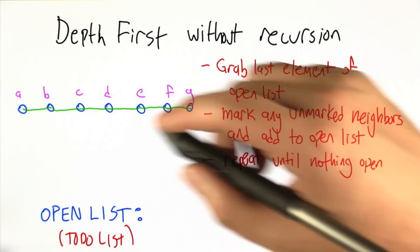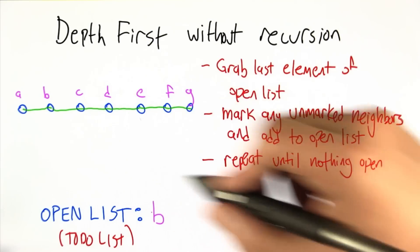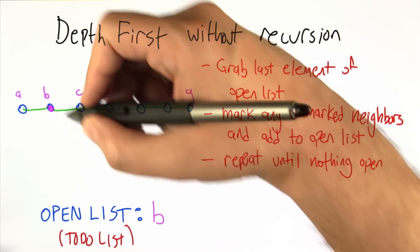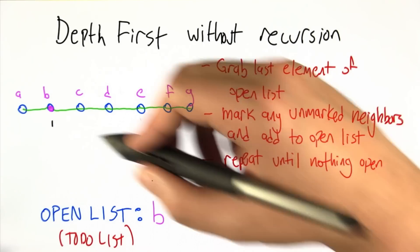All right, this time we're going to do it just a tiny bit differently. What we're going to do is we're going to search this graph starting from B, and we're going to mark as we go the order in which we've added things to the open list.